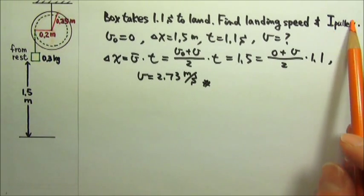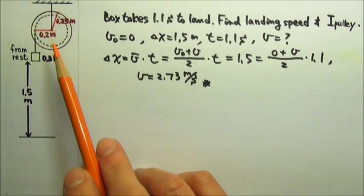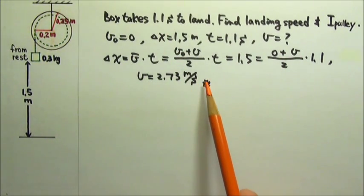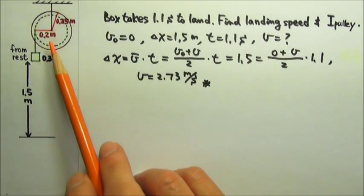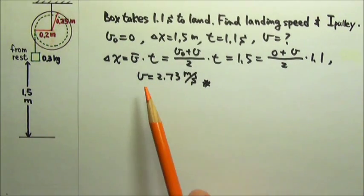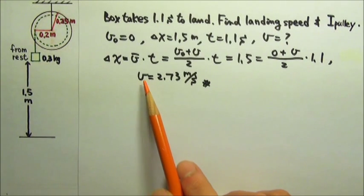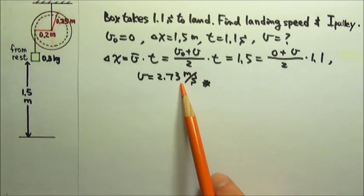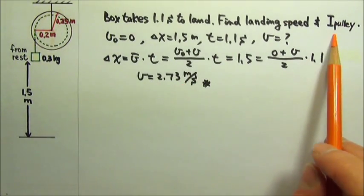To find the rotational inertia of the pulley, we can choose to use the kinematics again to find the acceleration, and then write the force and torque equation, and then find the rotational inertia. Or, since we already know the final speed, if we know the speed, we can use the conservation of energy to find the rotational inertia.